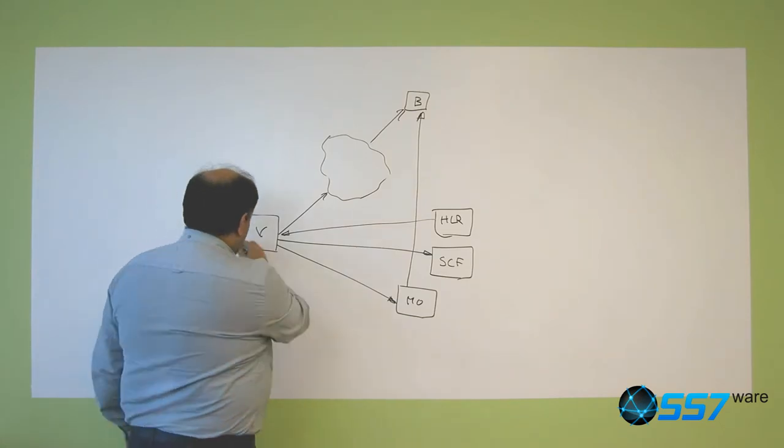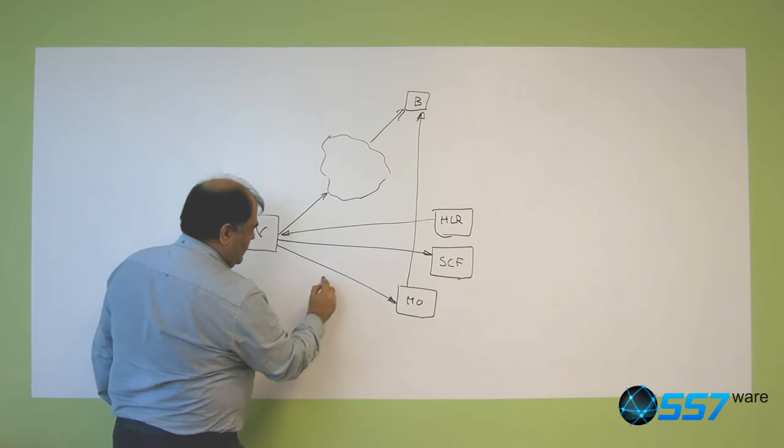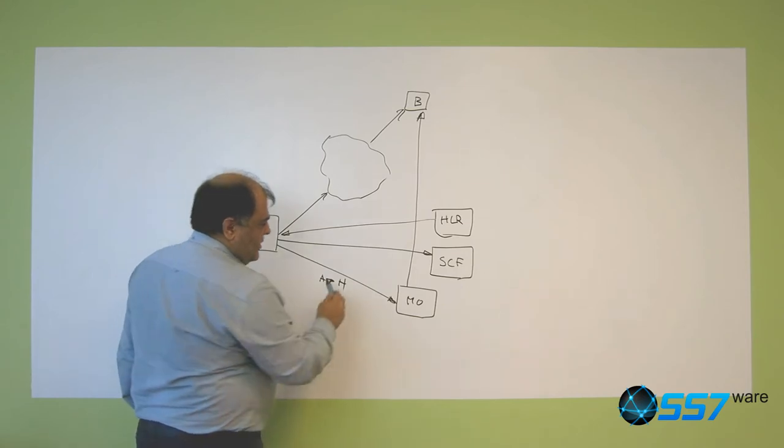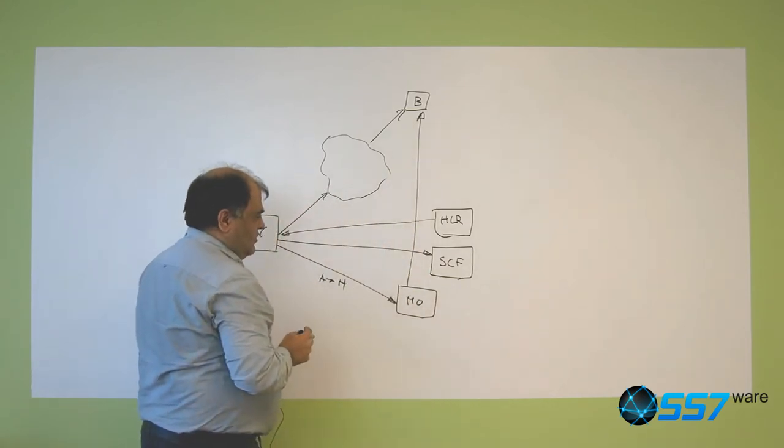For doing so, here the call is rewritten. Here the call is from A to B, and here the call is from A to a home network number, and then the call goes back to the B party normally.